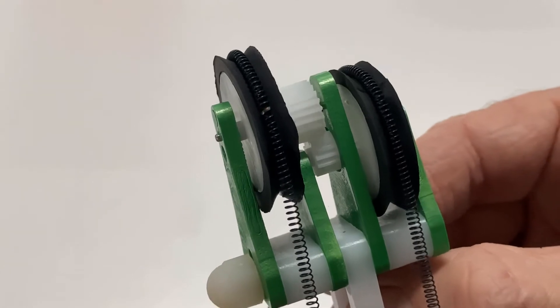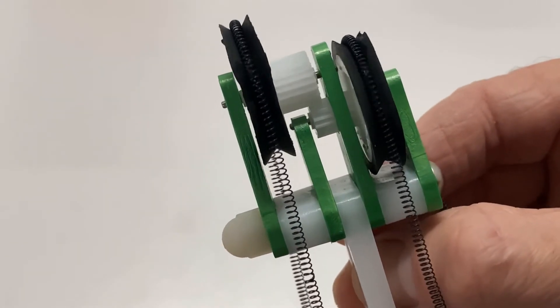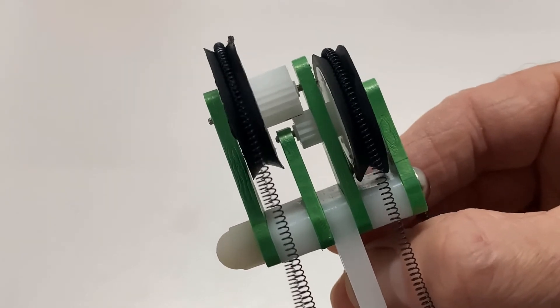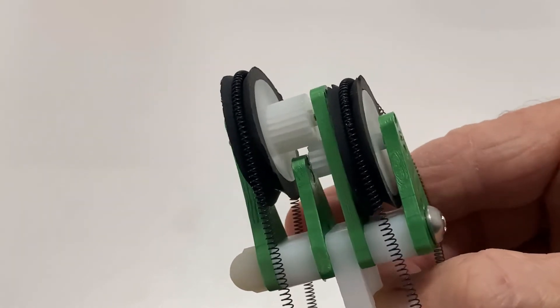Ultimately I'd like to replace the expensive shape memory alloys with one of our much cheaper twisted and coiled polymer fiber artificial muscles. Look out for our next video to see our updates.